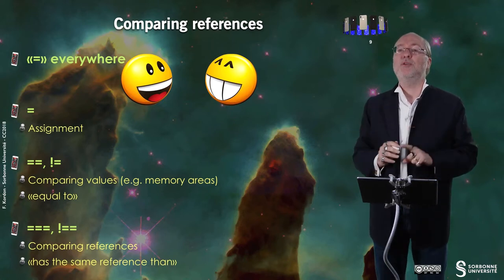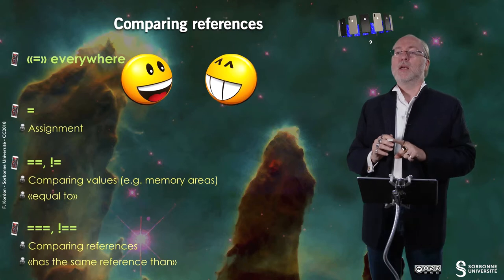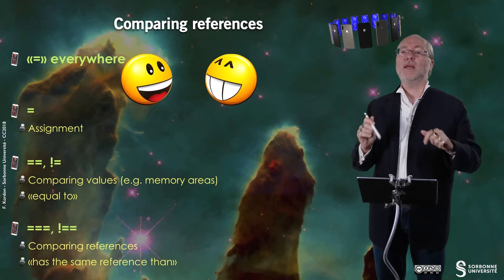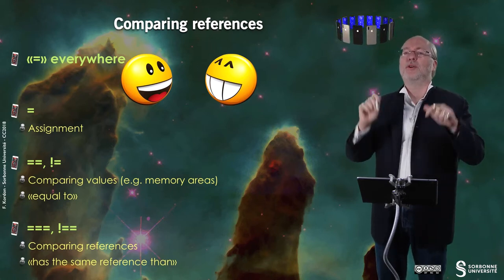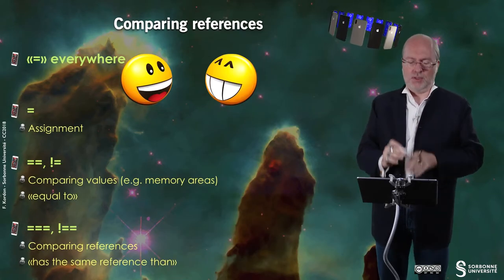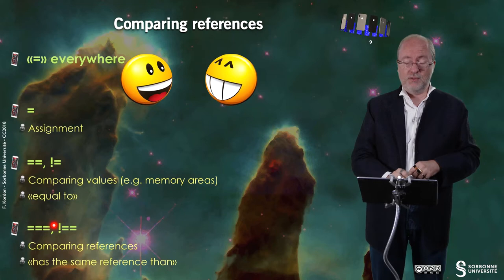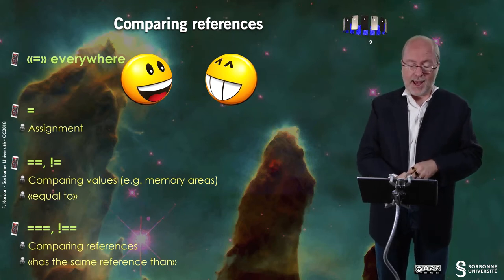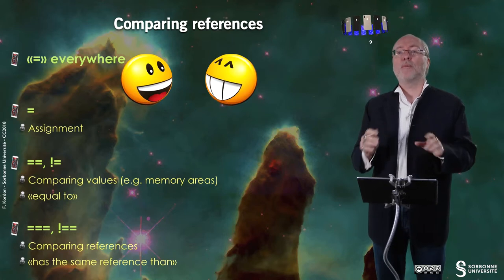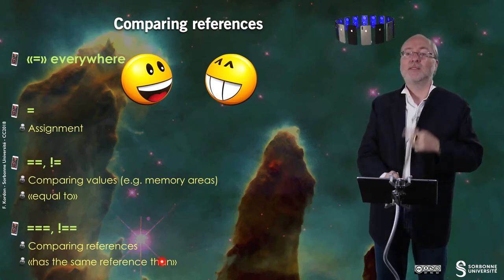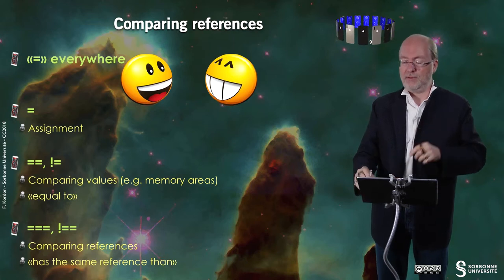But what if I want to compare references? I don't use double equal, but I use triple equal. Or this is for different. And here I am comparing references. So I am not comparing the reference in memory. I am comparing the references themselves. And so you should interpret it as the same reference as. Let's have a small example.